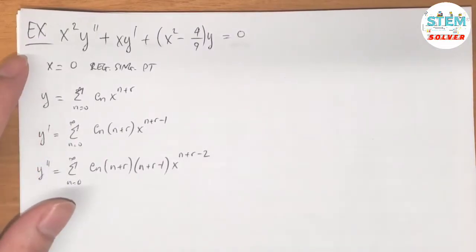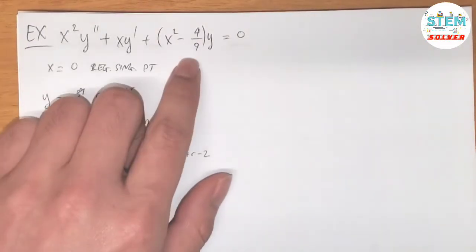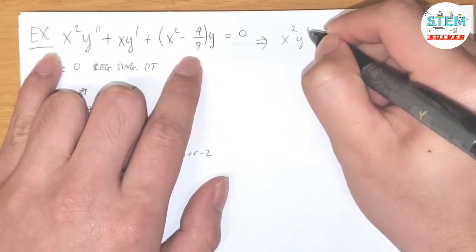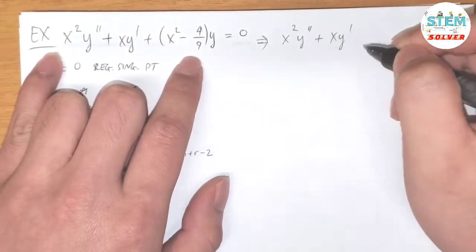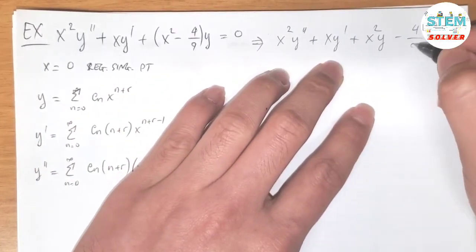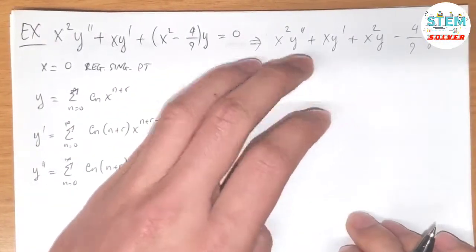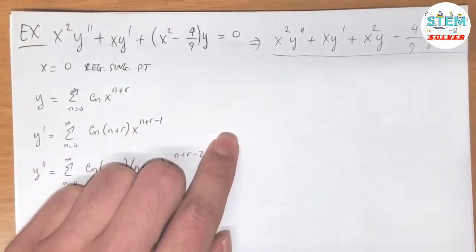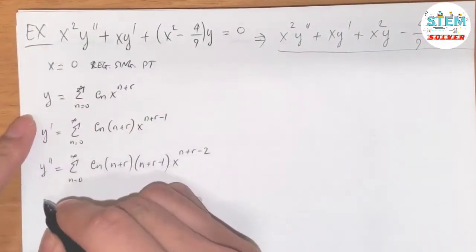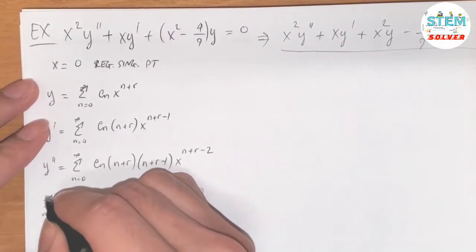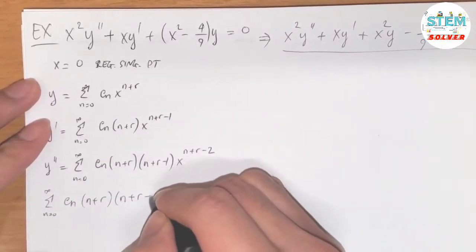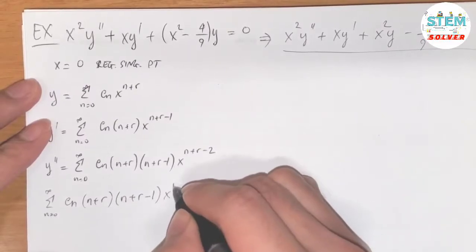Now I'm going to plug these into the differential equation, but before I do that I'll distribute it out. So I have x·y·y double prime plus x·y prime plus x·y minus 4/9·y equals 0. Substituting, the first term gives the power series from 0 to infinity of cn(n+r)(n+r−1) x to the n+r.